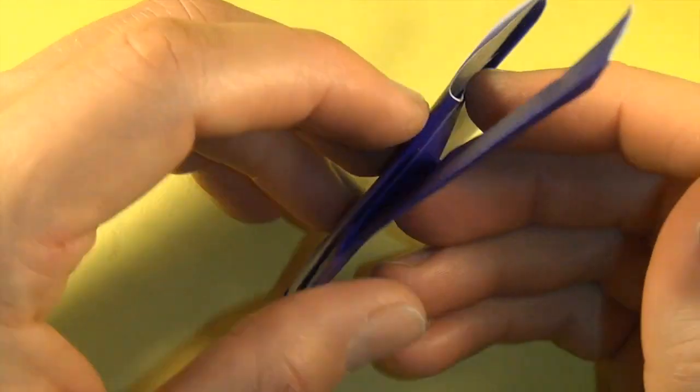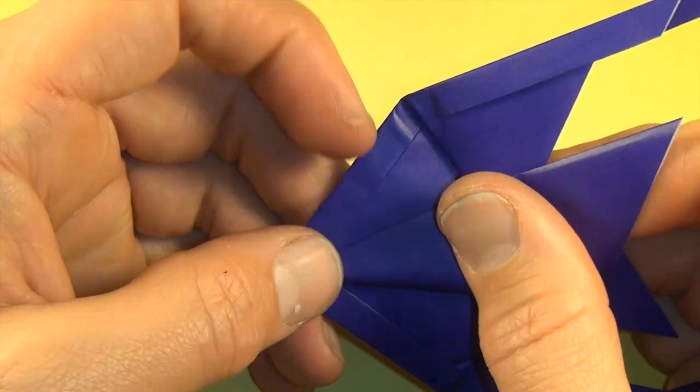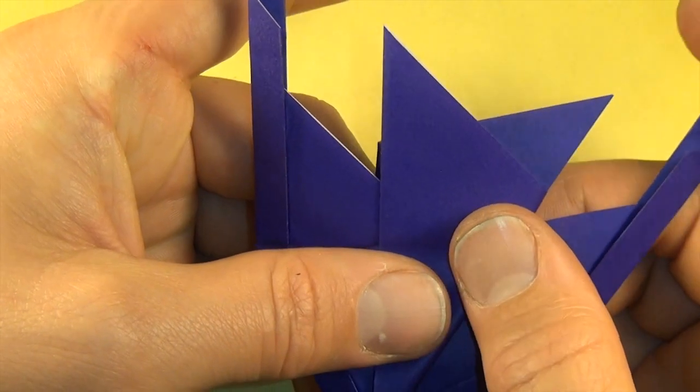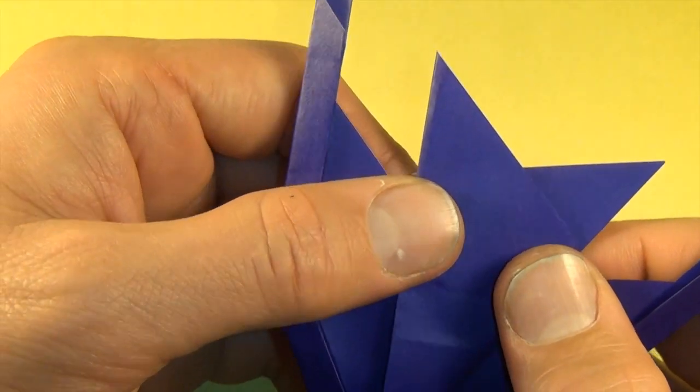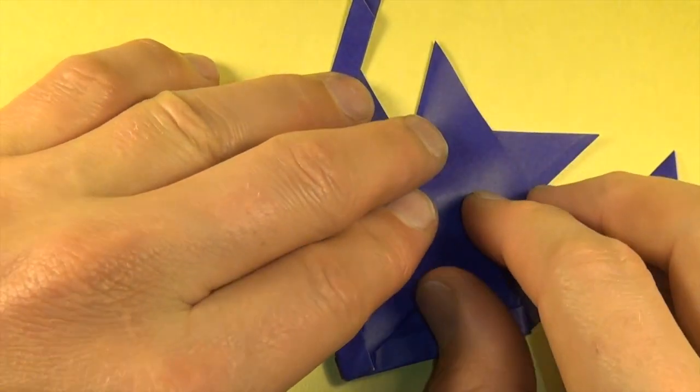And do the same thing on the other side. You don't need to flatten it. You don't want to flatten it until you really see that they're equal. And just fiddle with the folds until they wind up. Flatten.